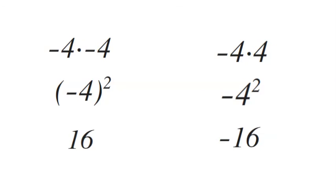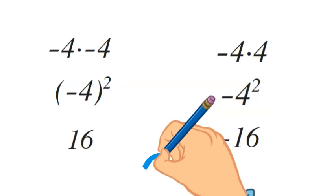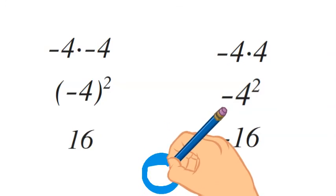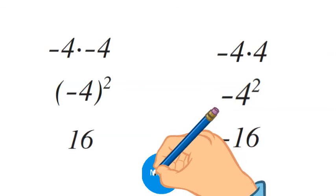So pay careful attention. That negative needs to be in the parentheses if you want it to multiply by itself. If you don't want it to be part of it, it doesn't need to be in parentheses. It does change the answer, though.